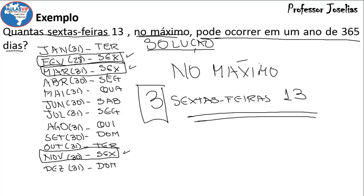Observe também que todos os dias da semana apareceram: segunda, terça, quarta, quinta, sexta, sábado, domingo. Isso quer dizer que podemos ter no mínimo um. Qualquer ano de 365 dias tem no mínimo uma sexta-feira 13 e no máximo três sextas-feiras 13. E não precisa ser necessariamente de 365 dias — isso vai acontecer também nos anos bissextos. Portanto, um determinado ano, bissexto ou não, tem no mínimo uma sexta-feira 13 e no máximo três sextas-feiras 13.